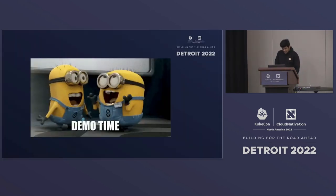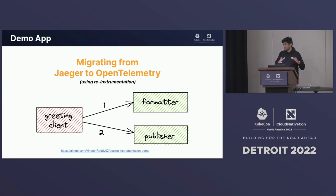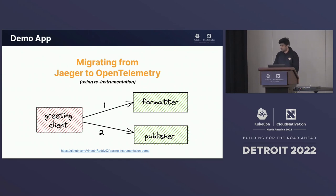It's demo time. My demo is a clone from the OpenTracing Tutorial in GitHub authored by Yuri, to understand how instrumentation works. I'm taking the same application and showing what the Jaeger instrumentation looks like and how the OpenTelemetry instrumentation looks. It's a simple app with a greeting client, a formatter, and a publisher. The greeting client sends a request to the formatter, which formats the string, then the greeting client publishes to the publisher for stdout output.